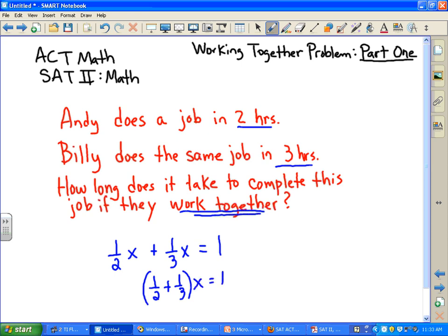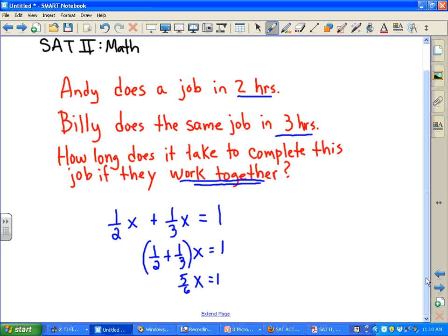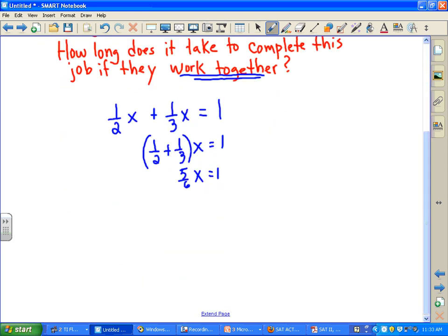So what we wind up getting is one-half plus one-third, that's five over six x, and that's equal to one. And to extend the page a little bit, you're gonna have that x is equal to the reciprocal of five over six, which is six over five or 1.2 hours.